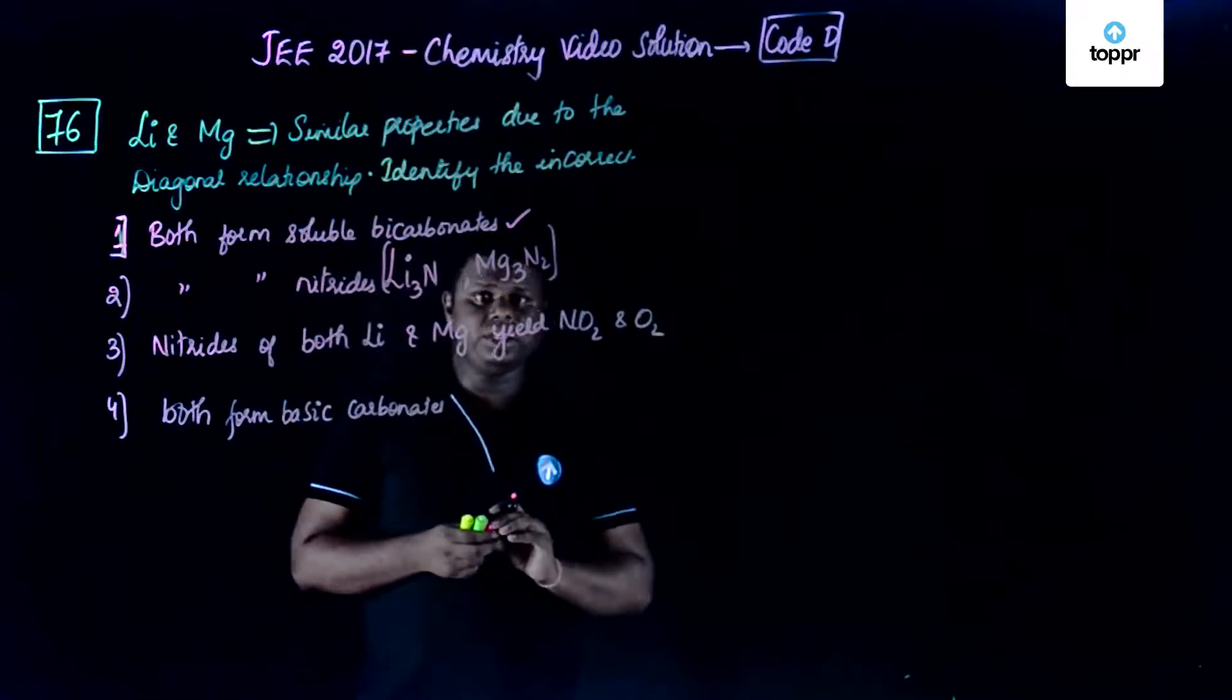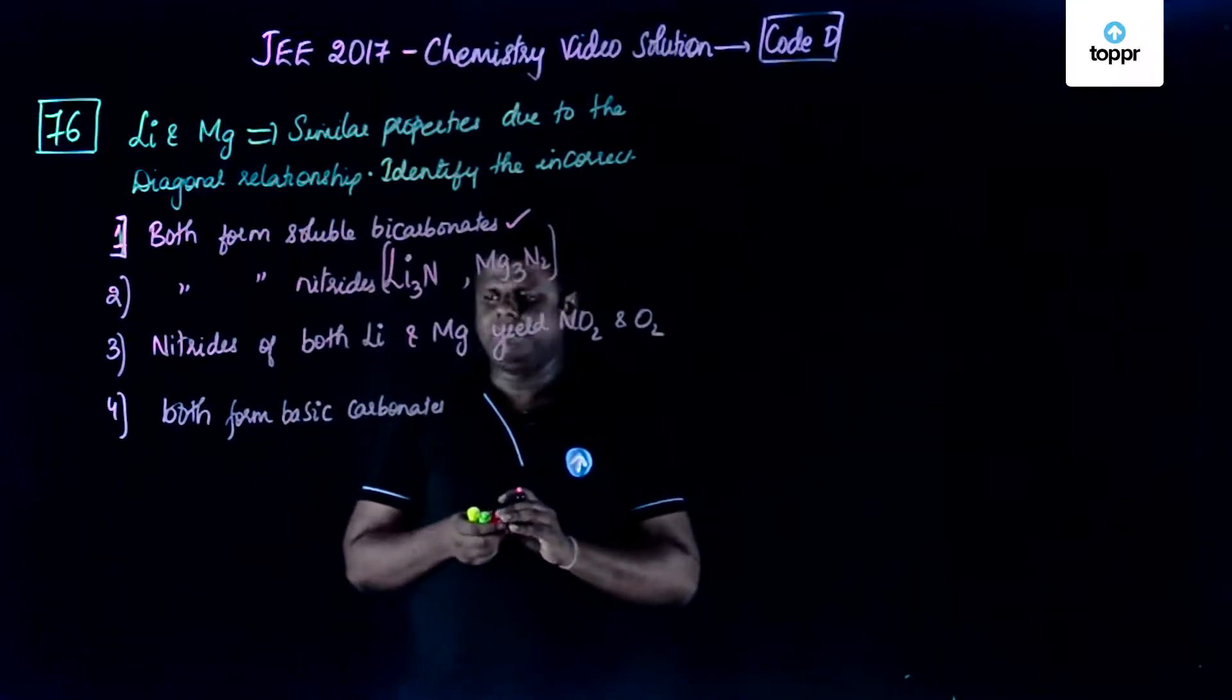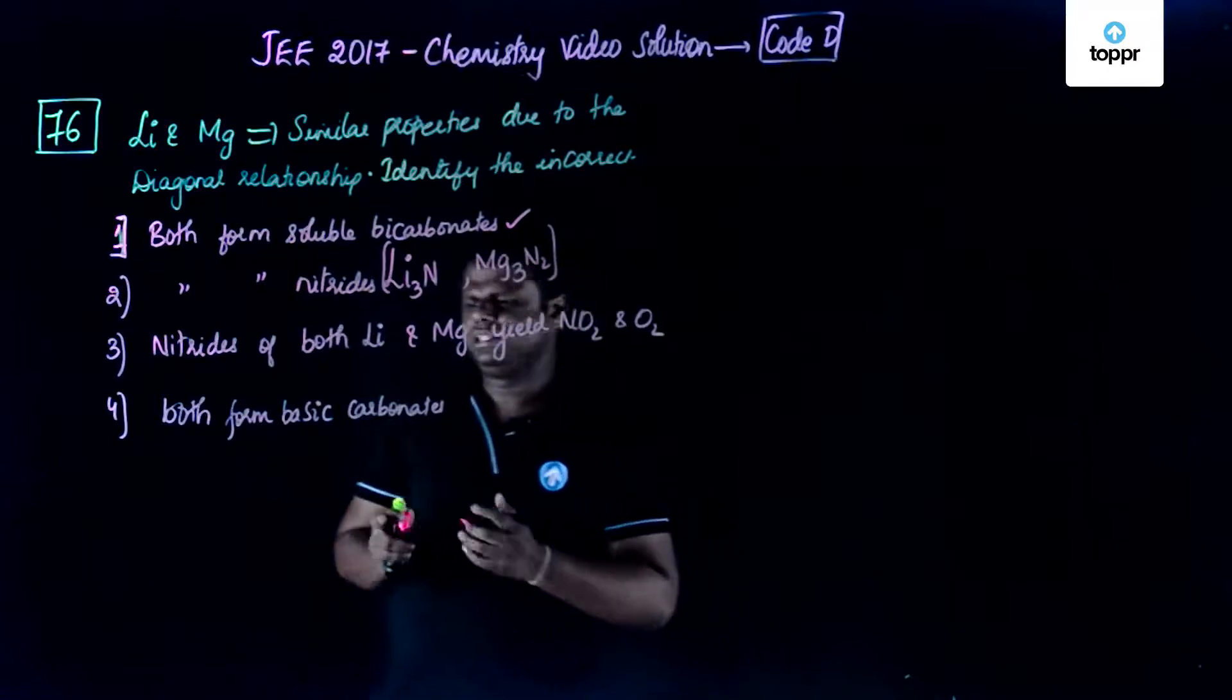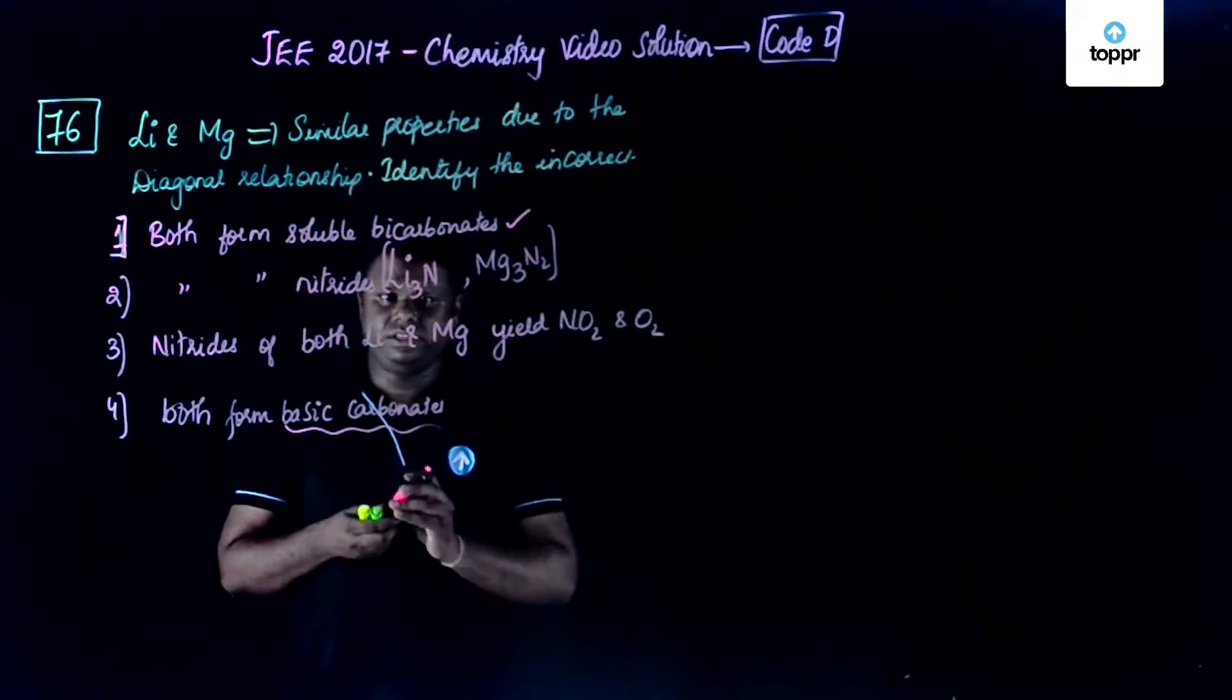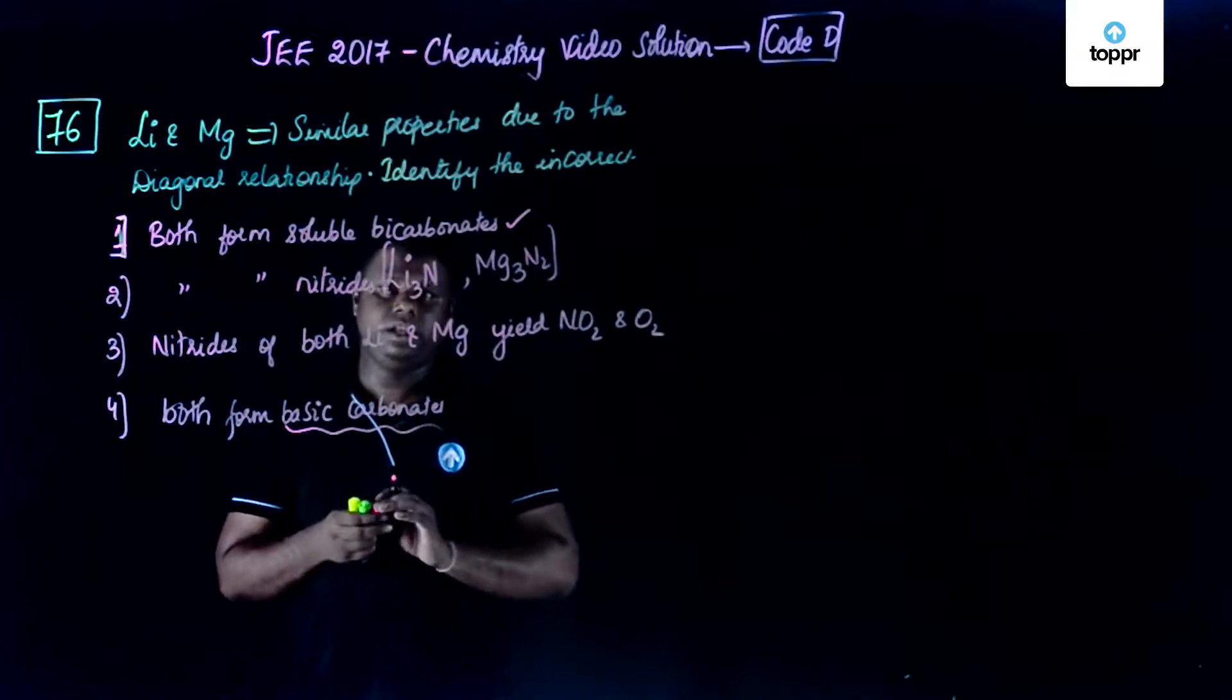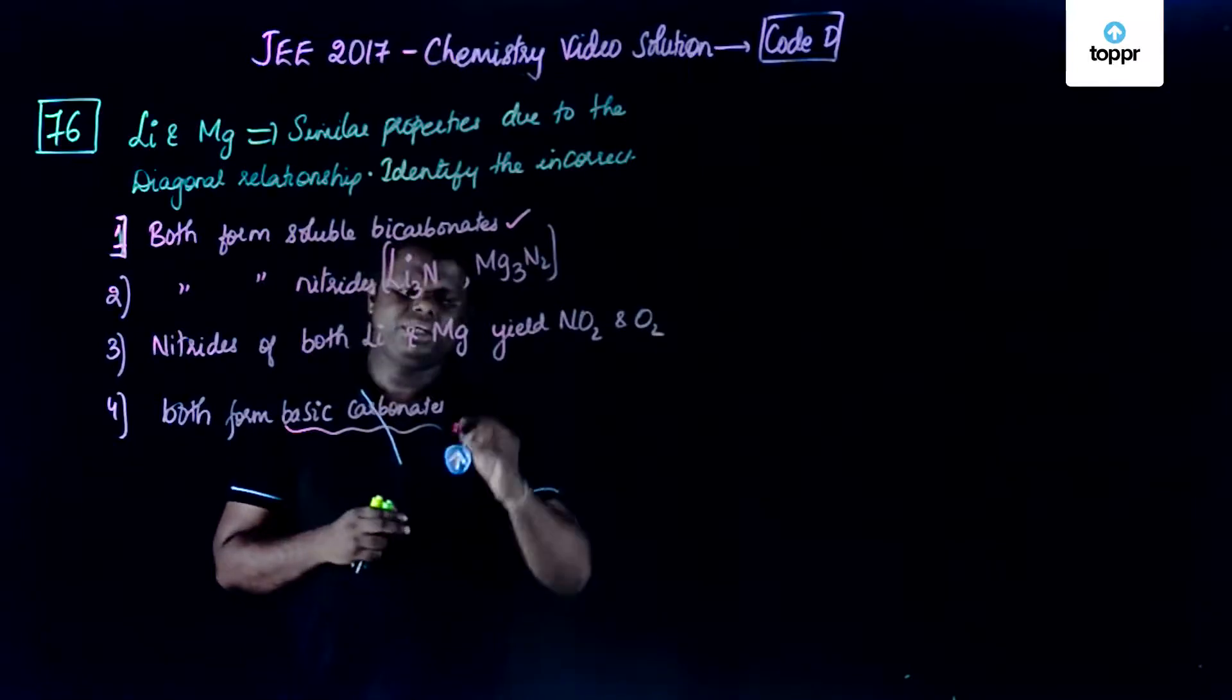They form basic carbonates. Actually, the stability of carbonates is very very less and they are thermally unstable as well. So actually this is not correct in some sense because the basic carbonates are generally not - these carbonates are generally not stable. So that is the reason their formation is pretty much difficult.